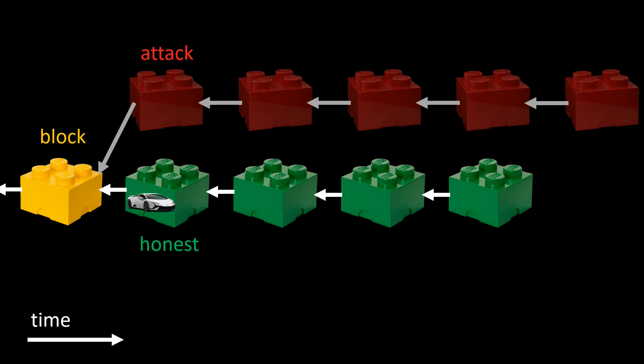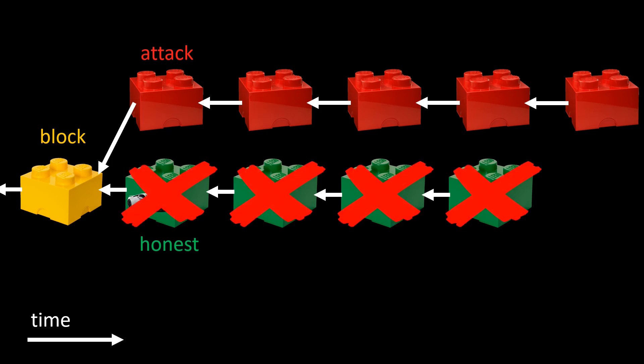As soon as the attacker has more blocks, the attacker will reveal these red blocks to the public. Then all the honest miners see that there is a longer chain available. Honest miners will append new blocks to the longest chain, so the green chain is ignored, and with it all the transactions in the green chain, including our transaction that transfers the money for the car. So the attacker managed to get a car and at the same time managed to censor the transaction paying for the car.